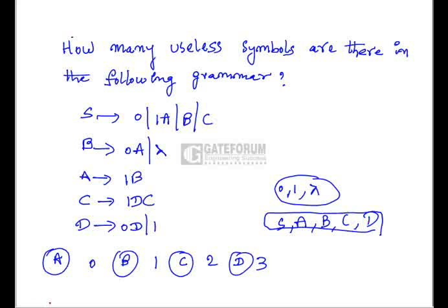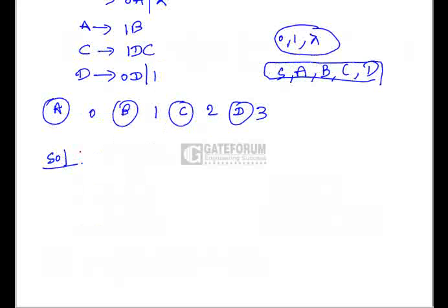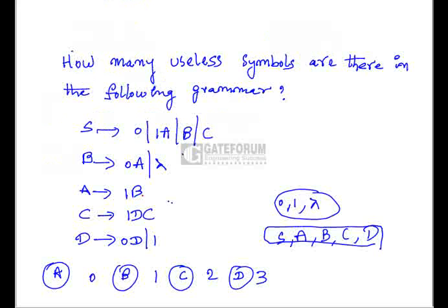A useless symbol is a variable not used in the derivation of any string. For a variable to be useful, it must either directly or indirectly derive a terminal string, and it must be obtainable from the starting symbol directly or indirectly. Variable C is not deriving any terminal string — if C is replaced with 1DC, that C will continue indefinitely. So even though C is reachable from the start symbol, it never derives a terminal string, which is why C is useless.